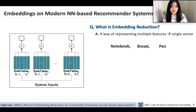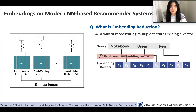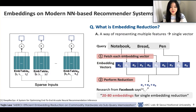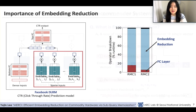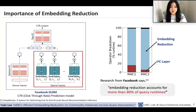Here is an example from the previous slide. Our purpose is to represent Kathy's browsed history — notebook, bread, and pen — into a single vector, so we perform embedding reduction on them. The set of features whose embeddings are going to be reduced is called a query. The embedding vectors are fetched from memory, their sum is computed, and returned. According to research from Facebook, they fetch around 20 to 80 embedding vectors for a single embedding reduction operation. In fact, this simple operation accounts for more than 80% of the query runtime in several recommender models that Facebook utilizes, so improving its performance directly leads to reduction in query runtime.